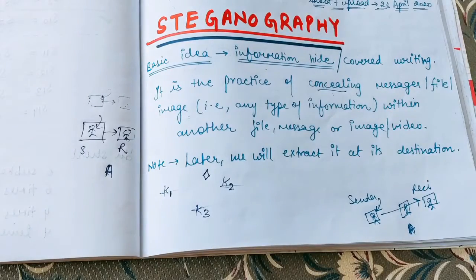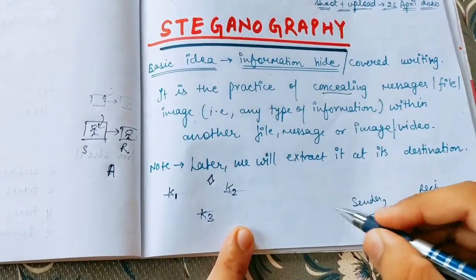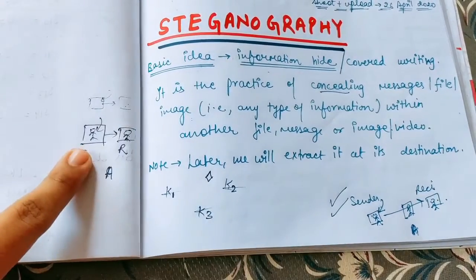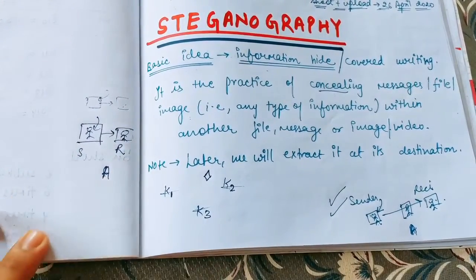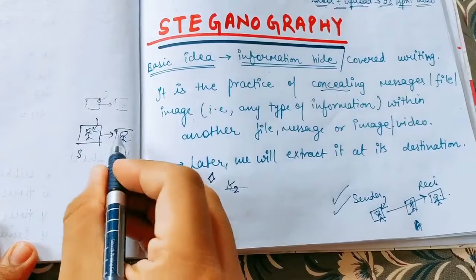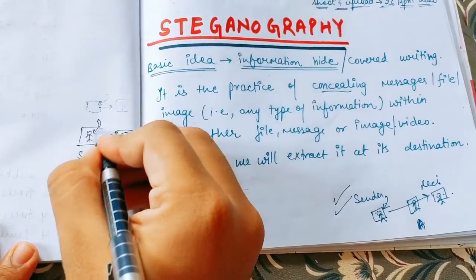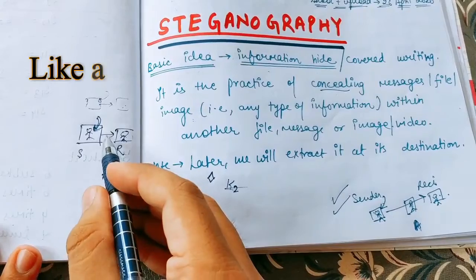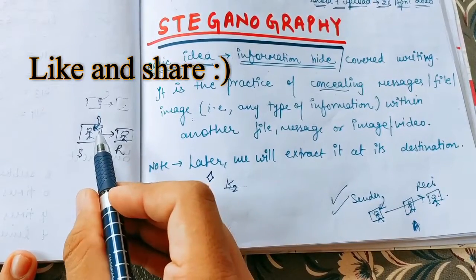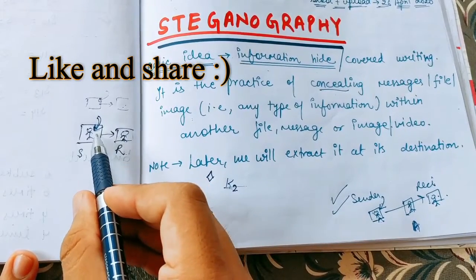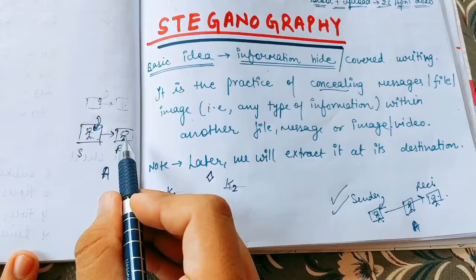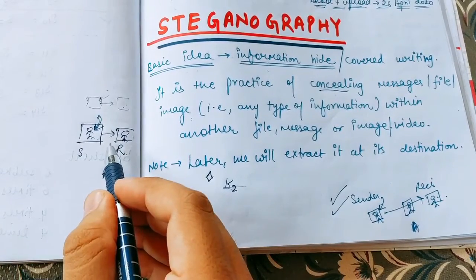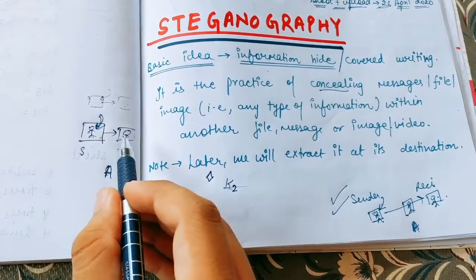Now let us see some more things about steganography. In the sender and receiver example, we are sending an image and we have embedded a special message inside it. And the attacker, if he sees the image, will not be able to know that some secret message is there — he will see just the same image of this particular person. So he will not know that some information is being conveyed from sender A to sender B, and therefore he will not be able to misuse that information.